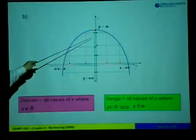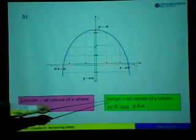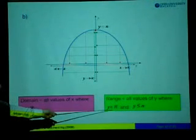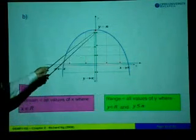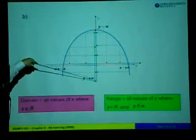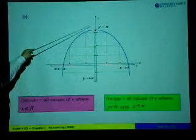So therefore we say the range of this curve is equal to all values of y, where y must be member of R, and then y is limited by 10, which is smaller or equal. So we write y less than or equal to 10. It must be below.